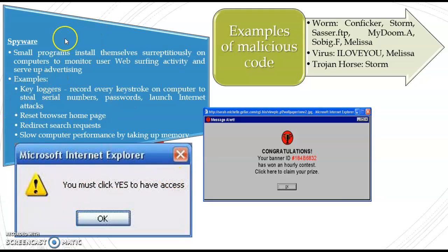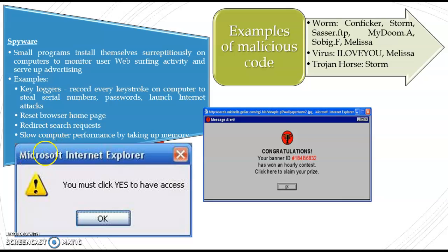Examples of spyware include keyloggers, which can record every keystroke — whatever you type on your keyboard, it will read. Another example is resetting the browser homepage or redirecting search requests: if you want to go to Google, it redirects you to a fake 'goggle' site. Spyware can also slow computer performance by taking up memory. These are examples of spyware.